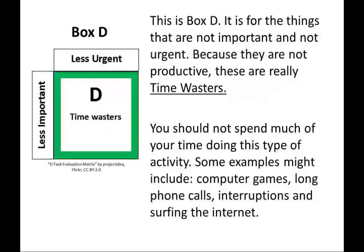This is box D. It is for the things that are not important and not urgent. Because they are not productive, these are really time wasters. You should not spend much of your time doing this type of activity. Some examples might include computer games, long phone calls, interruptions, and surfing the internet.